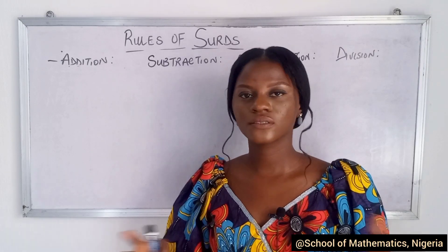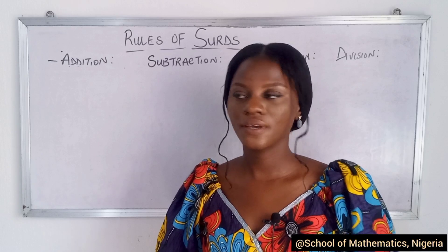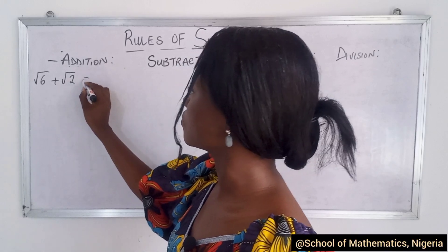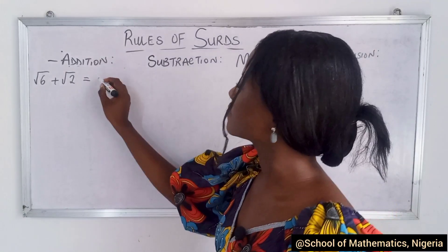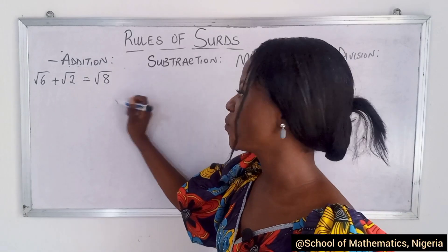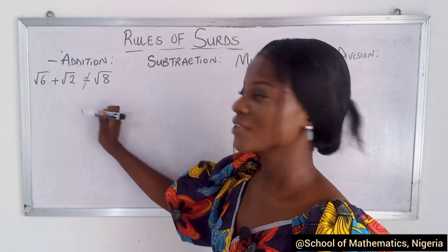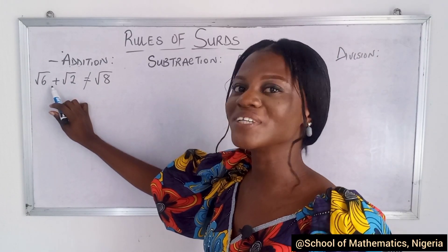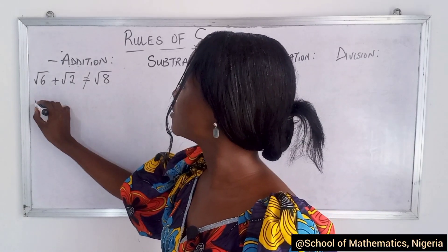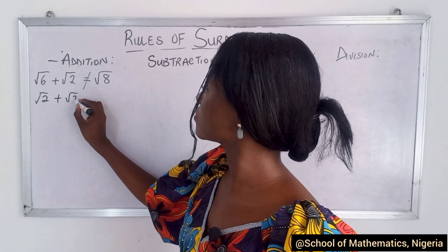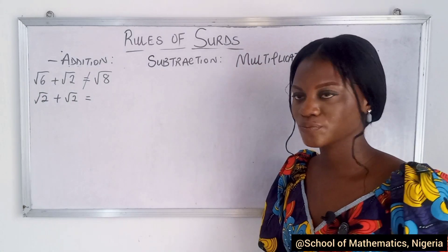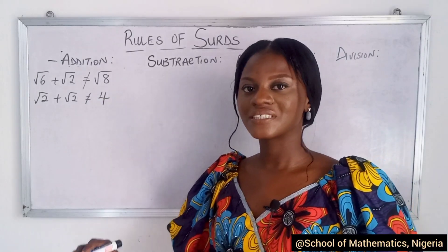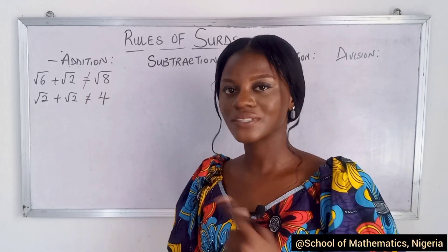The simplest way to understand how to solve questions in surds: if you are given something like root 6 plus root 2, you might think that gives root 8 — but that's wrong. The radicals are different, so we cannot add them together; they don't belong to the same family. Now imagine you have root 2 plus root 2. Somebody would say root 4, which is also not correct. We're dealing with the values outside the root, not inside the root.